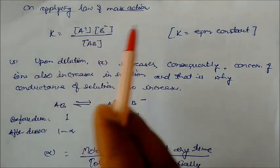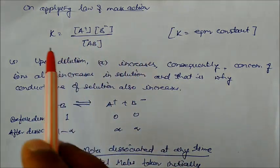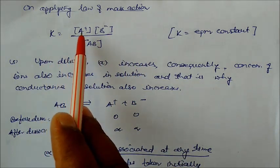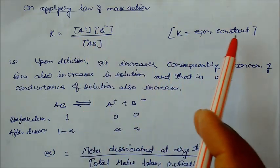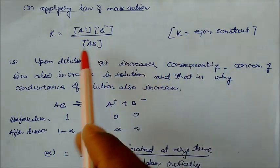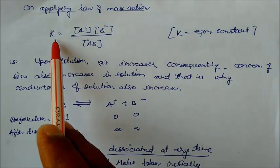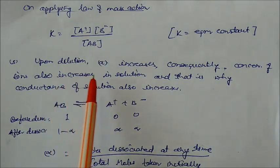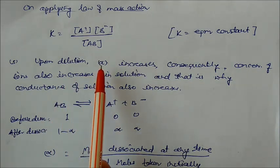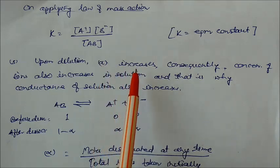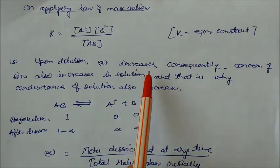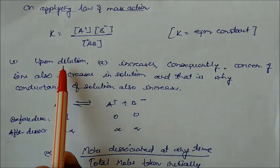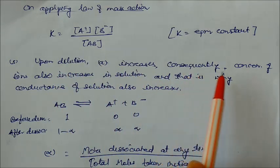Applying the law of mass action: K = [A⁺][B⁻] / [AB], where K is the equilibrium constant. We can get the K value from a weak electrolyte this way. The third postulate: alpha, the degree of dissociation, increases upon dilution.